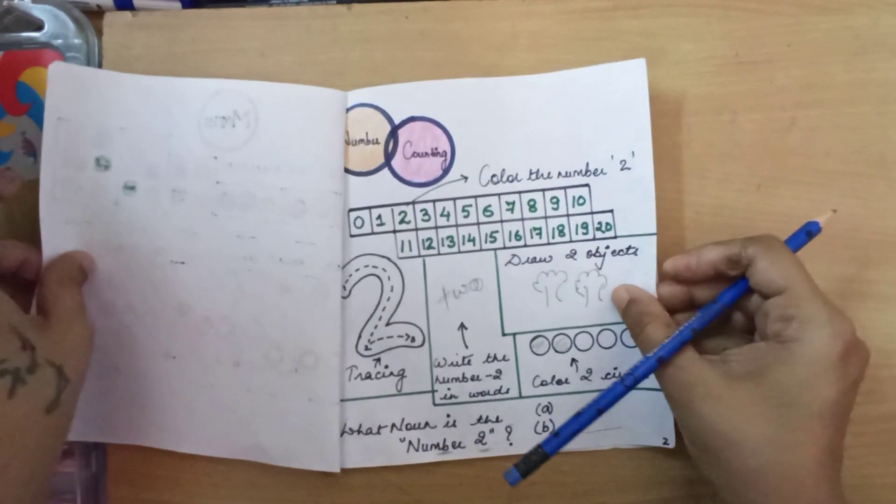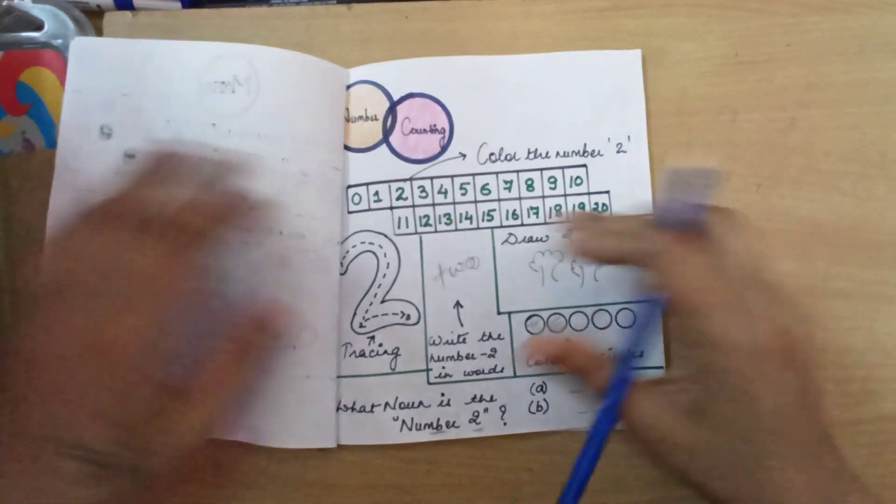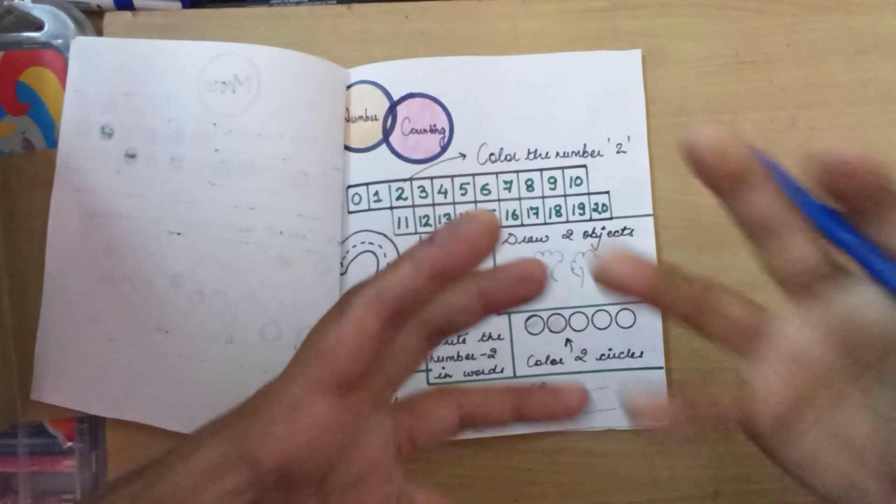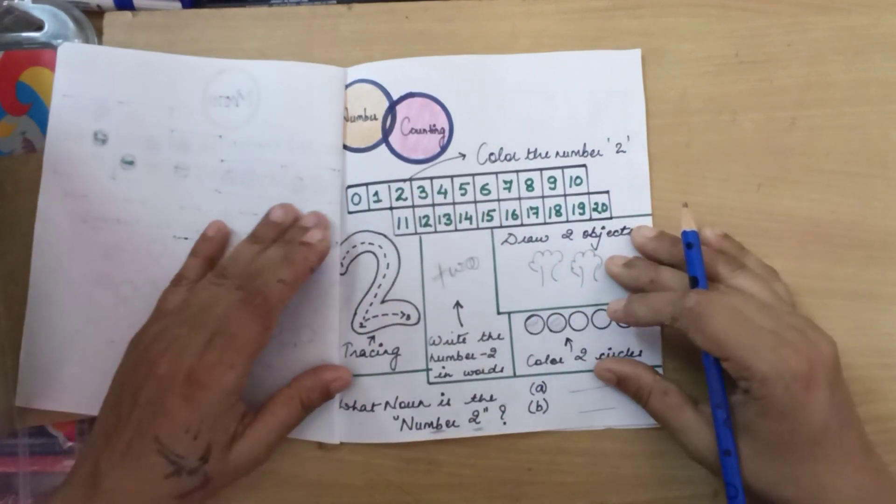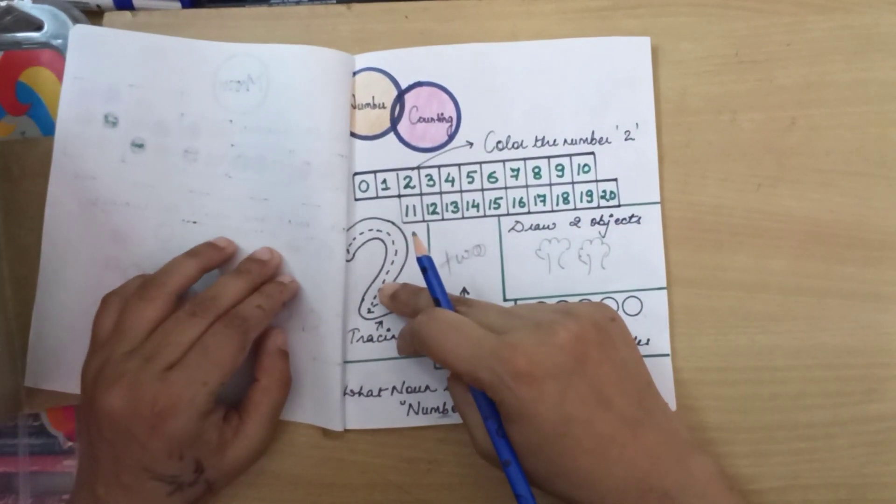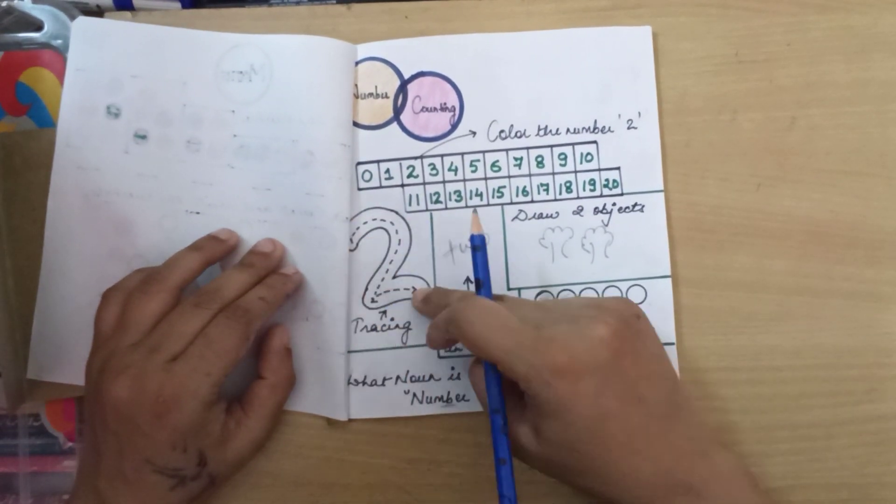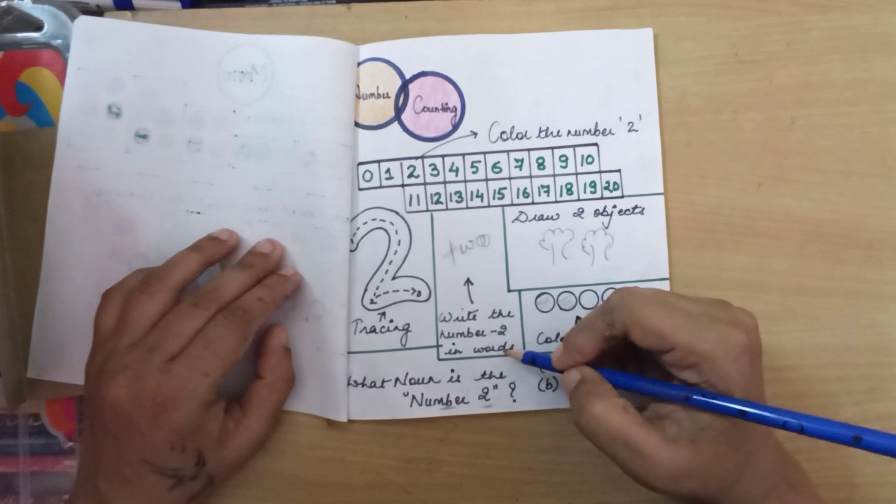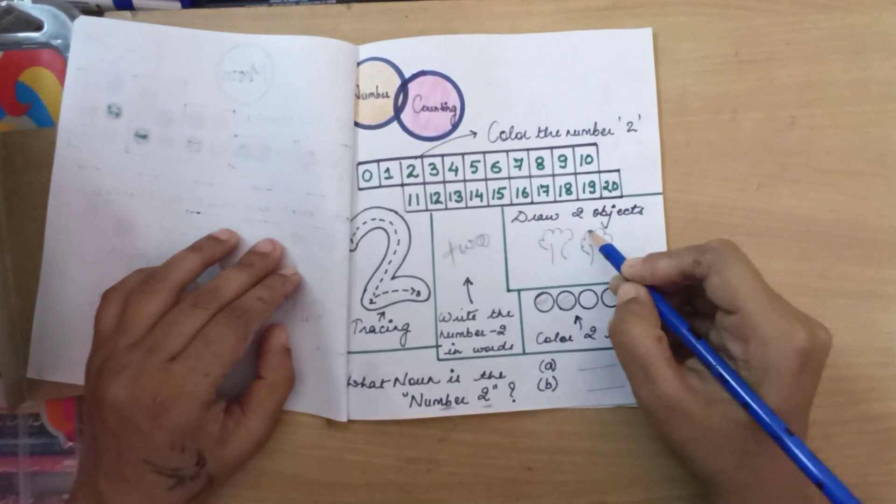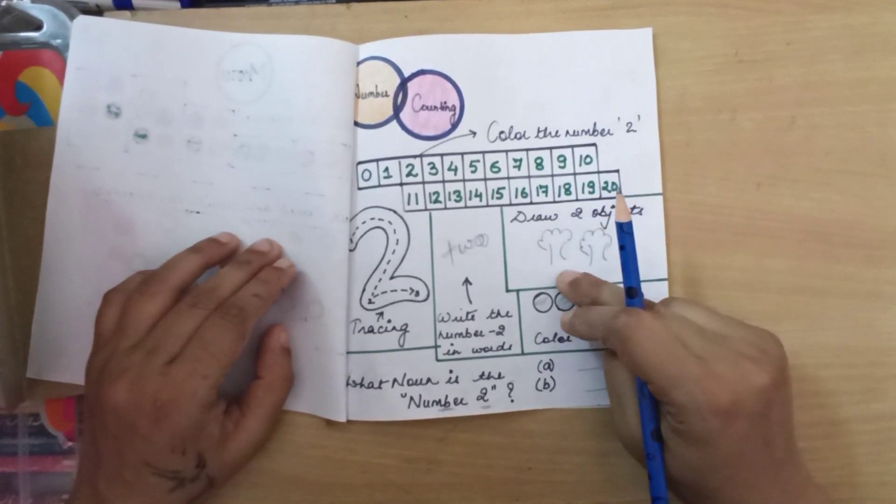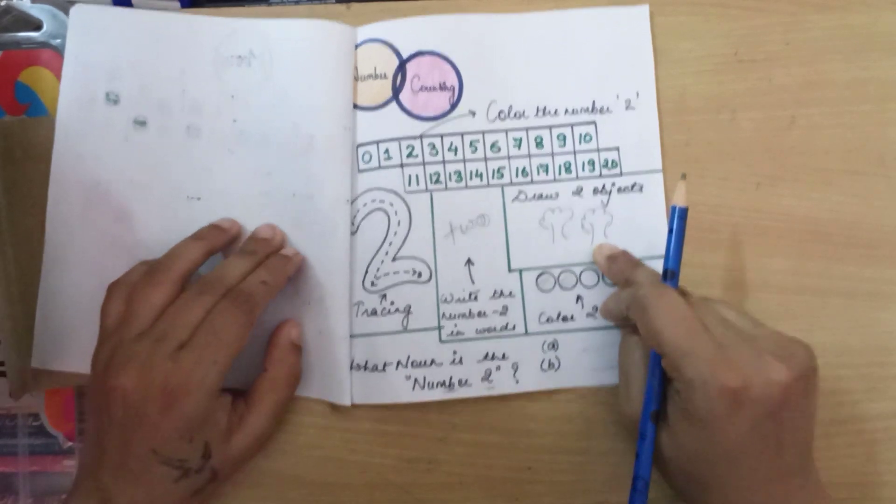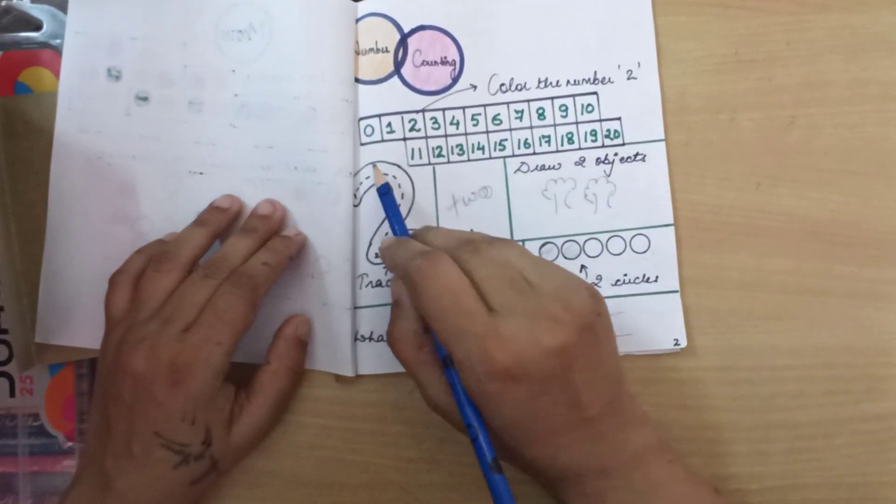Then my next page talks about number counting. This is a silly puzzle area for Shaina that I've created. I've picked up a random number - I've picked up two here. So this is a tracing. The kid is supposed to write the numbers in words. Draw two objects with number two. So I've drawn two trees here. The kid is supposed to find the number two here.